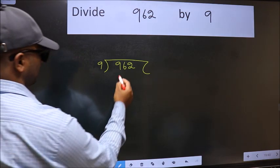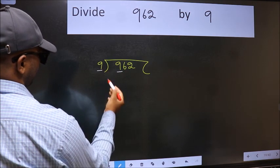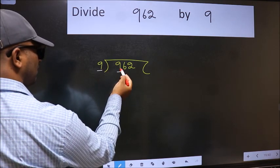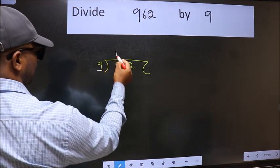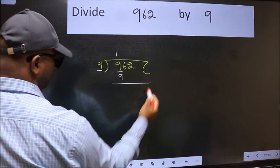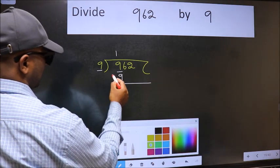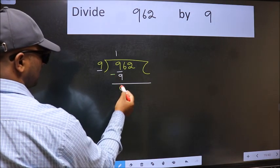Here we have 9 and here 9. When do we get 9 in the 9 table? 9 once is 9. Now we should subtract. We get 0.